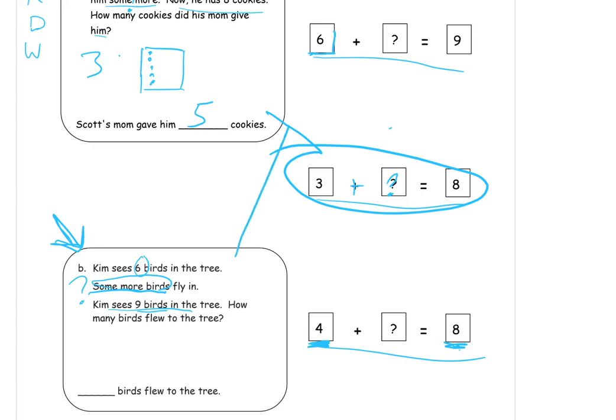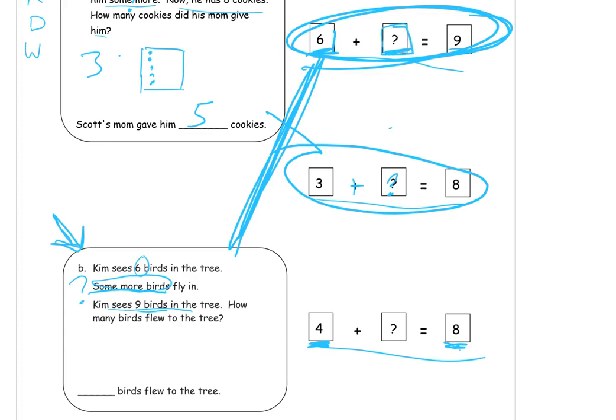Where we start with six, we add some more, and then we end up with nine. There's a question mark there because that's what we have to figure out. I mean, it's pretty easy to figure out. But we're just keeping track of what we know and what we don't know. So, we would start with a six, and then we would have seven, eight, nine. It's three more that we had to add. Three more flew in the tree.